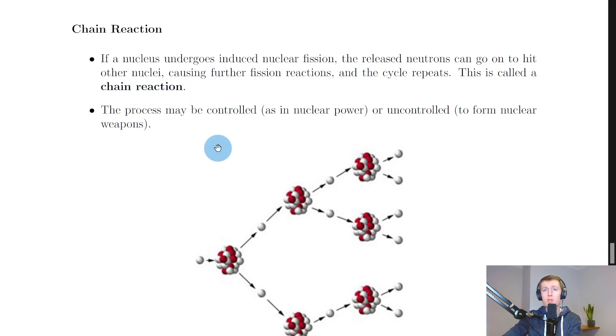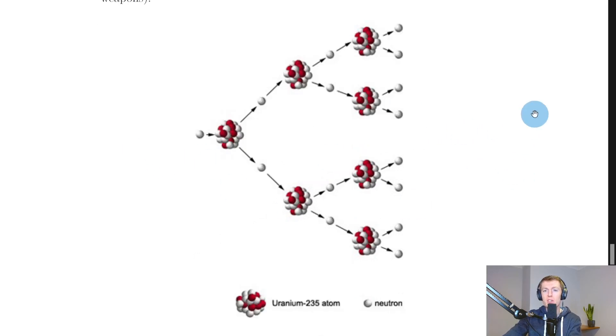So it relies on the process of nuclear fission first of all in order to generate more neutrons which can then go on and cause more nuclear fission reactions to happen. We say the process may be controlled, as in nuclear power or nuclear fission reactors, or uncontrolled to form nuclear weapons. The picture here shows a nice breakdown of a chain reaction going on.